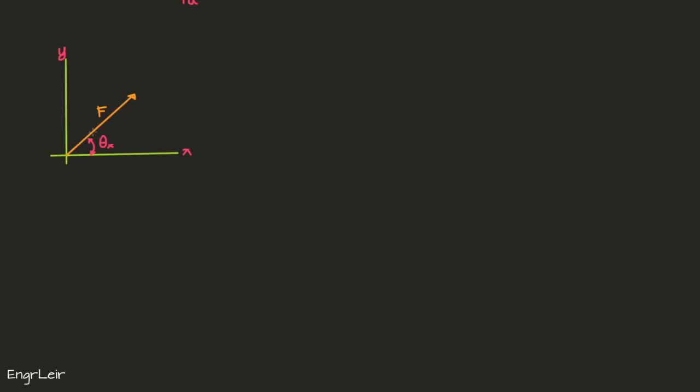Usually I label this as the angle theta sub x, and this one is the angle theta sub y. It means it's the angle that the force makes with the x-axis, that's why theta sub x. And this one is the angle that the force makes with the y-axis, theta sub y. Another way of thinking about it: it's the angle towards x and the angle towards y.